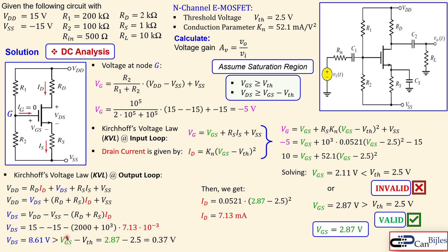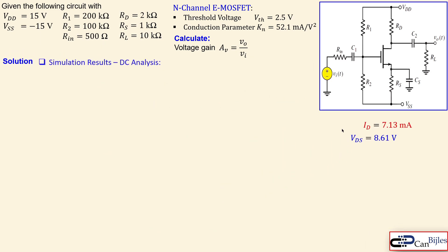VDS = 8.61 V is definitely larger than VGS − VT = 2.87 − 2.5 = 0.37 V, so both saturation conditions are fulfilled and the assumption is confirmed correct. If the assumption were wrong, the MOSFET would be in the triode region or cutoff. We now collect our DC values: ID = 7.30 mA and VDS = 8.61 V.